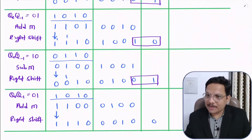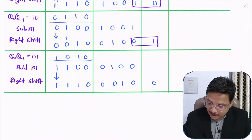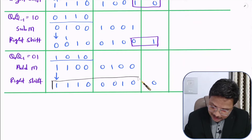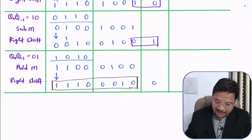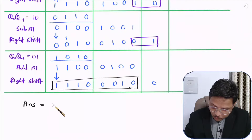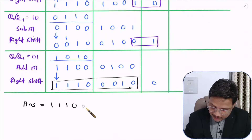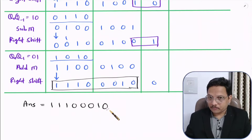So you can say now you are having your answer. Your answer is the accumulator and Q combined, which is 1, 1, 1, 0, 0, 0, 1, 0.